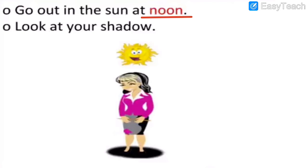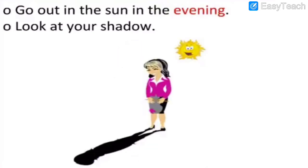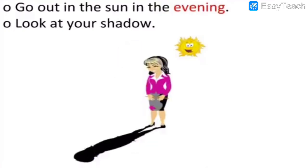After that, go out in the sun in the evening — around five o'clock. Look at your shadow once again and it will be long, similar to the morning. In the evening, the sun is descending — it is going down — because in the afternoon the sun is at the center, exactly above our head.